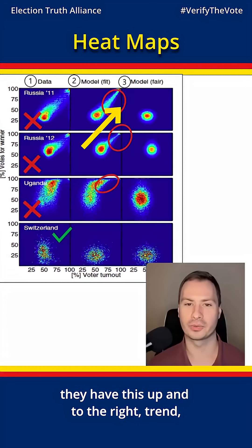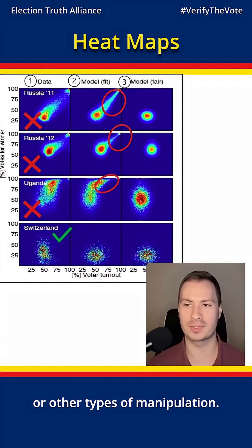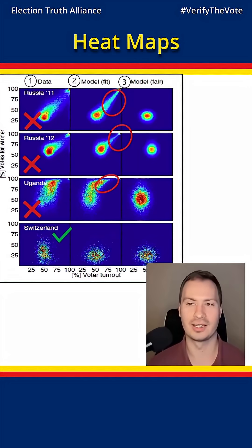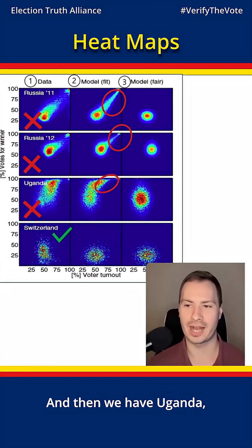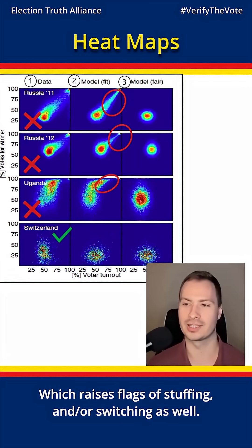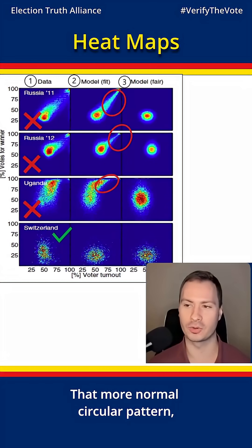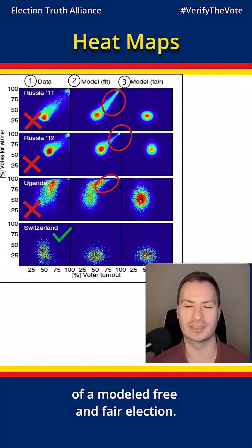We're seeing that in Russia in 2011 and 2012 they have this up-and-to-the-right trend, which could be caused by ballot stuffing or other types of manipulation. Uganda shows an overall shift upwards, which raises flags of stuffing and/or switching as well. Switzerland is highlighted as more normal, showing that more circular pattern of a modeled free and fair election.